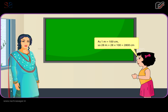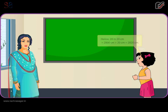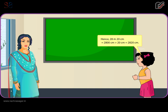As 1 meter is equal to 100 centimeters, so 28 meters is equal to 28 × 100 = 2,800 centimeters. Hence, 28 meters 20 centimeters = 2,800 centimeters + 20 centimeters = 2,820 centimeters.